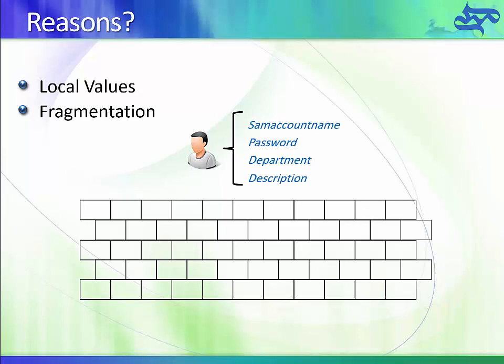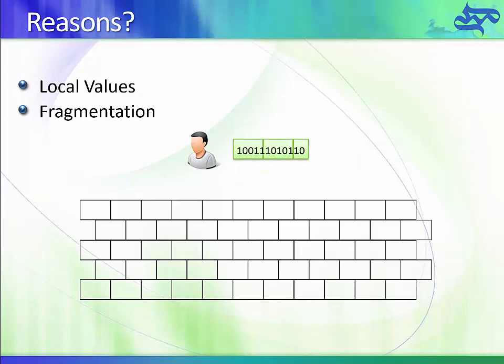When we save a user account, an internal Active Directory process converts all information into bits, and those bits are stored into the database blocks on the hard disk. As you can see, this information is stored onto the hard drive, shown in green.